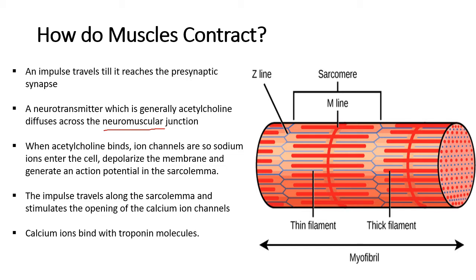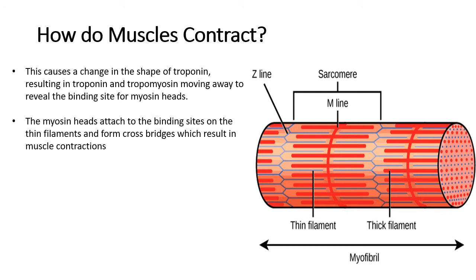Calcium ions bind to troponin. This causes troponin to change shape, moving out of the way and pulling tropomyosin with it. Once tropomyosin is moved, the binding sites for myosin heads on actin are exposed. Myosin is then able to bind to actin, forming what is called a crossbridge, and this results in contraction.